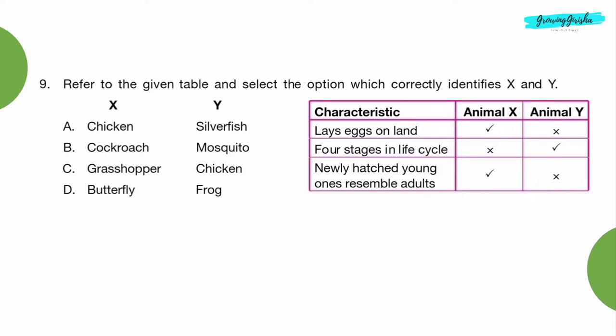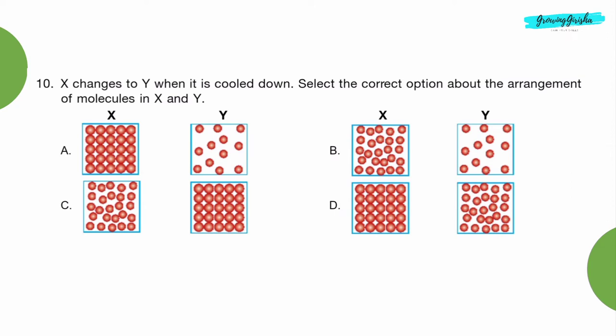Question 9: Refer to the given table and select the option which correctly identifies X and Y. Option B: X is cockroach and Y is mosquito. Question 10: X changes to Y when it is cooled down. Select the correct option about the arrangement of molecules in X and Y. Option C.